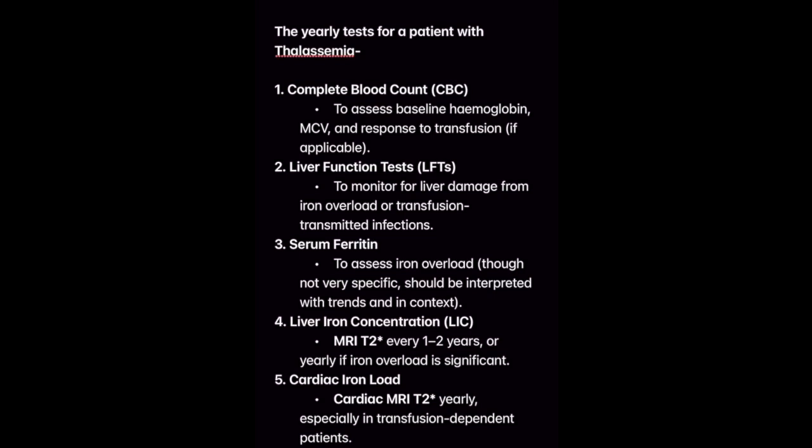Another important study for thalassemia is iron study, because most of the time complication arises because of the iron overload. It may overload in brain, it may overload in liver, spleen, thyroid, and some other things. Yearly tests for a patient with thalassemia are: complete blood count, liver function test, serum ferritin level, liver iron concentration by doing T2 MRI imaging, and cardiac iron load by doing T2 MRI cardiac imaging.